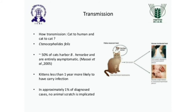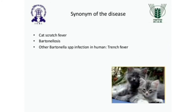The cat flea Ctenocephalides felis is responsible as a vector, and 50 percent of cats generally harbor the Bartonella henselae bacteria but are entirely asymptomatic. When such a cat bites or scratches you, you get pustules at the scratch site and possibly enlarged lymph nodes. Kittens less than one year old are more likely to carry the infection. In approximately one percent of diagnosed cases, no animal scratch is implicated.